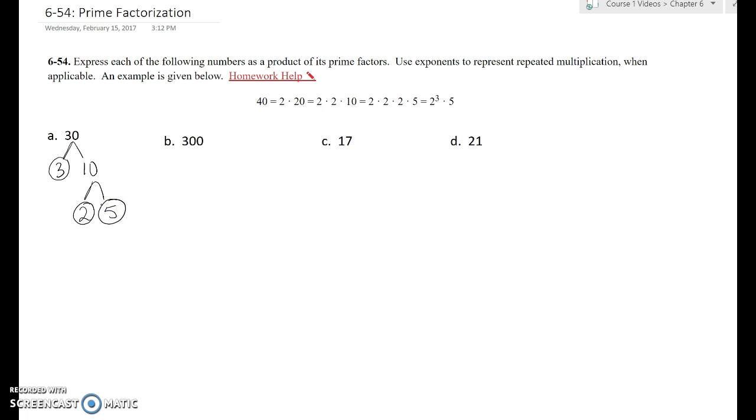Now if I rewrite these, I could rewrite that 30 is equal to 3 times 2 times 5, because it's 3 times 10, and 10 is 2 times 5. 3 times 2 is 6, and 6 times 5 is 30. No exponents here, so this is the prime factorization of 30.